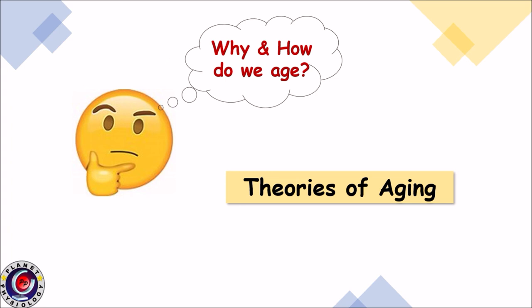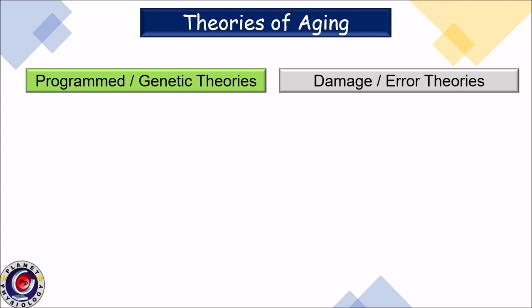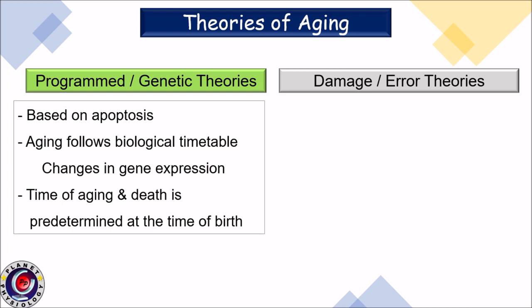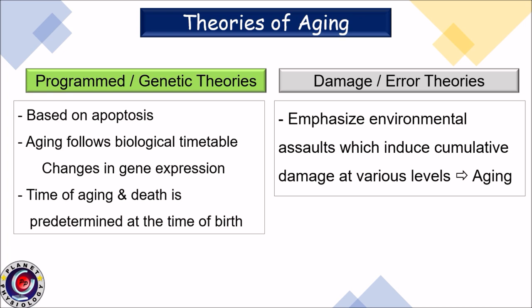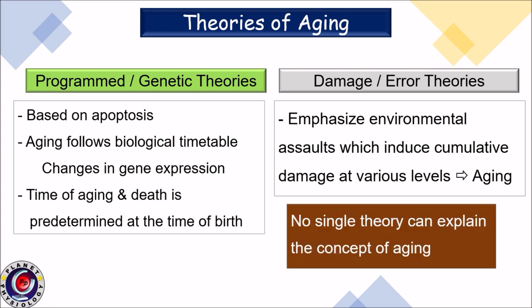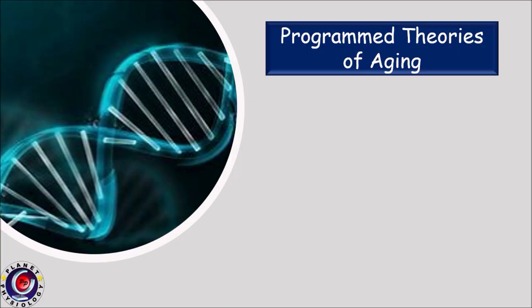You may ask: why do we age and how do we age? To answer these queries, many scientists have put forth various theories of aging. All these theories can be grouped into two categories: programmed theories, also called genetic theories, and damage theories. Programmed or genetic theories are based on the concept of apoptosis, and according to these theories, aging follows a biological timetable due to changes in genetic expression. The time of aging and death is predetermined at birth. In contrast, damage theories emphasize the role of environmental assaults to cells, where cumulative damage at various levels causes aging. No single theory can fully explain the concept of aging.